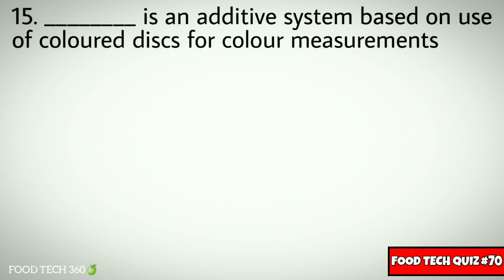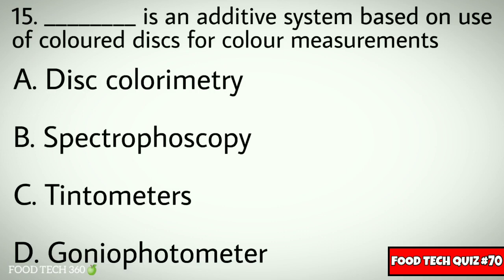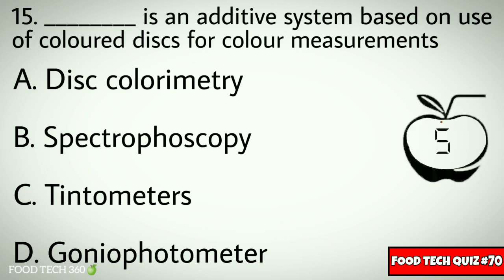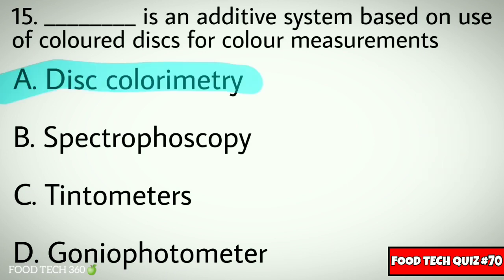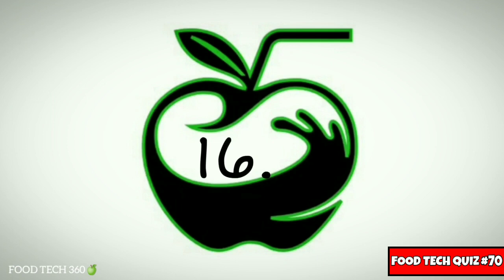Q15. Dash is an additive system based on use of colored discs for color measurements. Options: A. Disc colorimetry, B. Spectroscopy, C. Tintometers, D. Goniophotometer. Correct answer: A. Disc colorimetry.